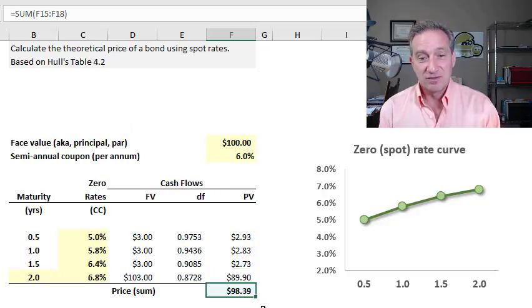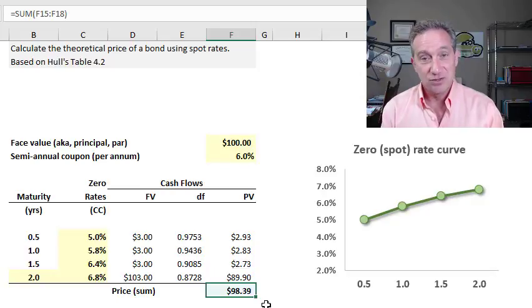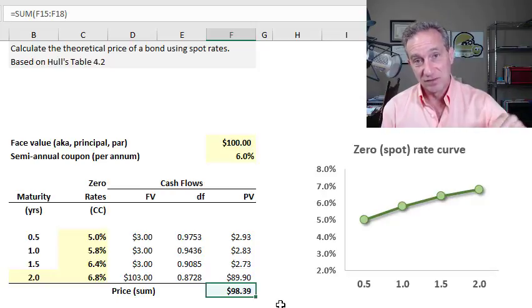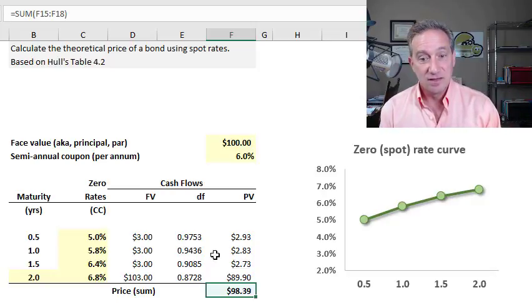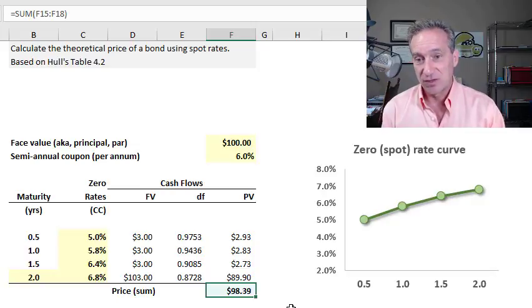That's important because we actually don't expect the traded price to equal the theoretical price due to technical factors like supply, demand, and liquidity. Those are my favorite technical factors. Supply and demand and liquidity will cause these actual bonds to trade rich or trade cheap.